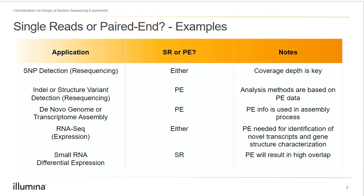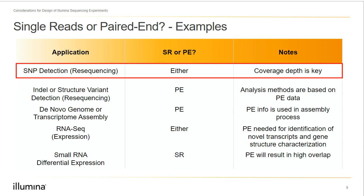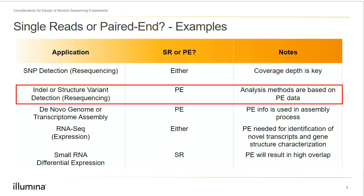Now that we've discussed the types of reads, let's talk about a few applications. For SNP detection or simple resequencing, we can use either paired-end or single-end reads. The key factor is depth of coverage. One intrinsic advantage of paired-end reads is that you get twice as much data if the reads don't overlap. However, if you get enough data from a single 100 base pair read, it's not necessary to use paired-end. For insertion deletion detection or structural variant detection, paired-end reads work best — as we move away from point features like SNP detection, structural features get much bigger, and paired-end is the better choice.